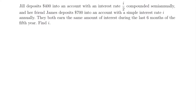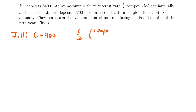This is a very challenging problem that tests your understanding of simple and compound interest. Let's dissect it piece by piece. First, let's focus on Jill: she deposits $400 with an interest rate of i over 2 compounded semi-annually. So Jill has C equal to 400, interest rate equal to i over 2, compounded semi-annually. The problem says both earn the same interest during the last six months of the fifth year — so overall we're looking at a time period of five years.